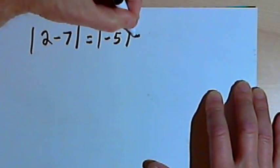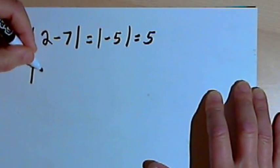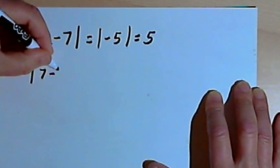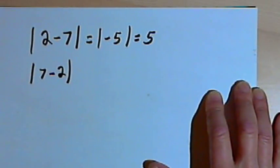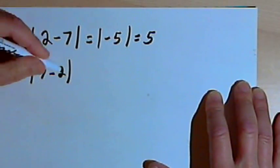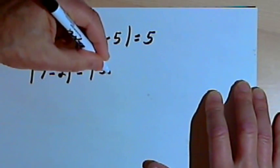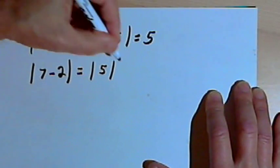And the absolute value of negative 5 is 5. Now if I turn those numbers around, if I had a 7 minus 2 and I wanted the absolute value, then I would have to subtract 7 minus 2. I'd have to work between those bars first. And 7 minus 2 is 5, and the absolute value of 5 is 5.